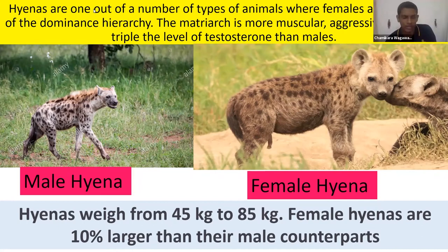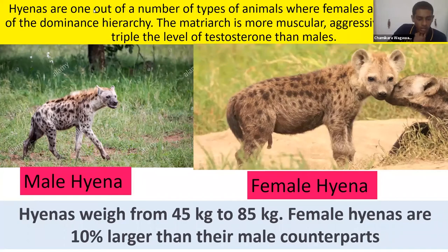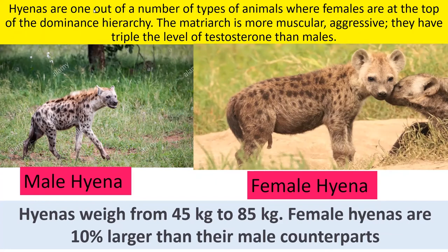On average, hyenas produce one to three cubs at a time. Because female hyenas have more testosterone, they have less developed nipples and pseudopenises. The female hyena is more dangerous than the male. Unlike other animals, the female hyena is larger than the male.